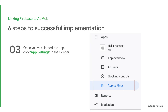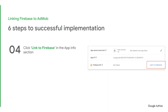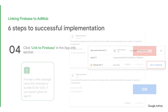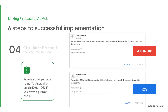Step 3: Once you've selected the desired app to link, click App Settings in the sidebar. Step 4: Click Link to Firebase in the App Info section. Note that if you didn't provide an app ID yet, please ensure that you offer a package name for Android or bundle ID for iOS that will be linked against the application in a Firebase project.